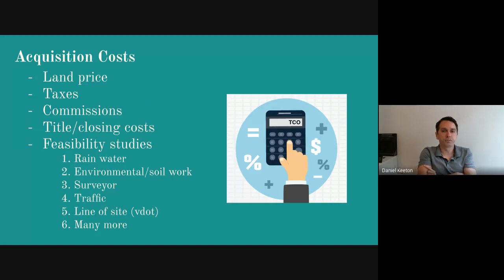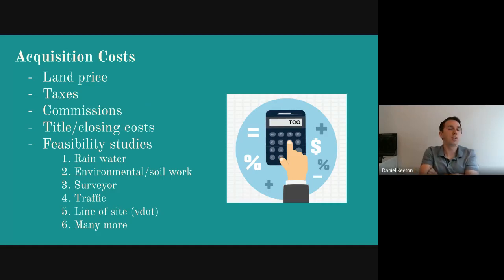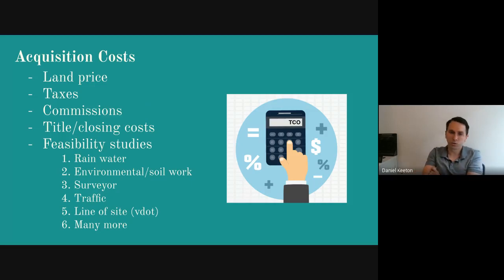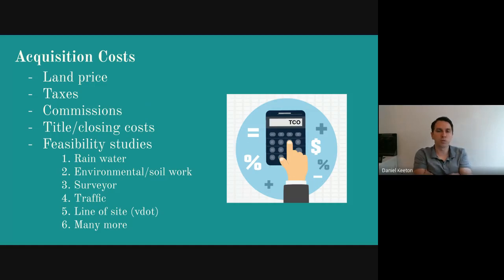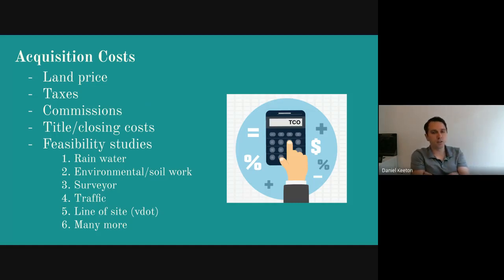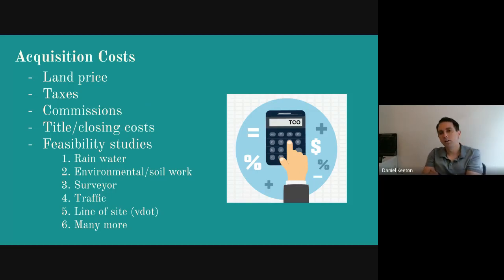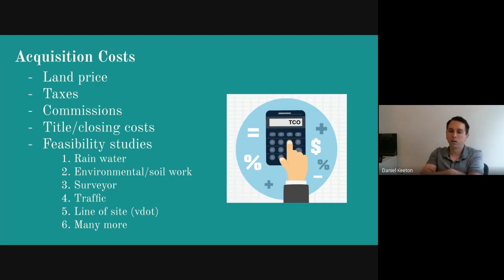Acquisition costs are the obvious things: land price — the cheaper you can get the land, the better profits for your client. There's also taxes on purchasing it, commissions that may be paid directly or built into the price, title and closing cost fees, and the feasibility studies we talked about earlier. Rainwater — when you develop a piece of land, the county wants to know where the water is going to go. You're going to build 50 houses, move the dirt, change where the water runs. Is it going to puddle in one place or funnel down to the neighbor's house? There's also environmental soil work, surveyors, and traffic.